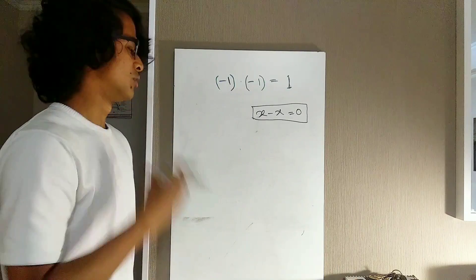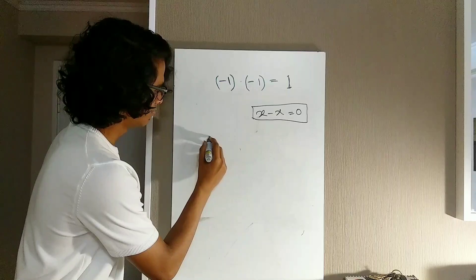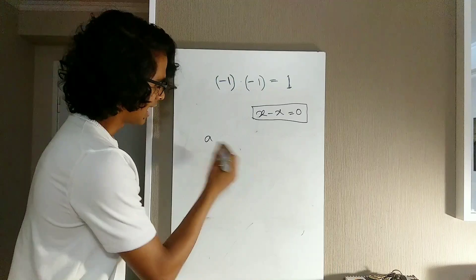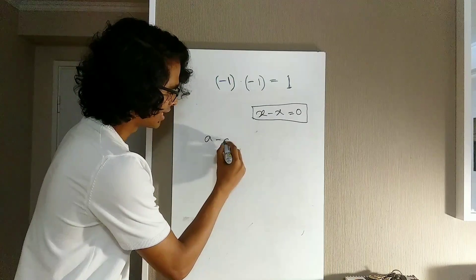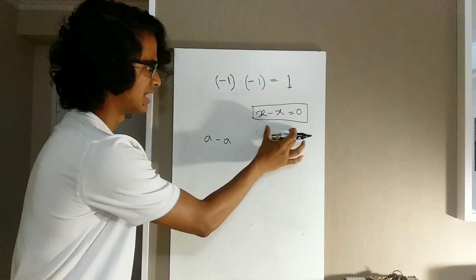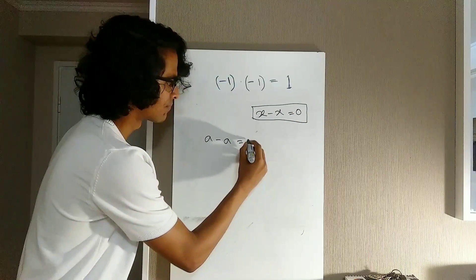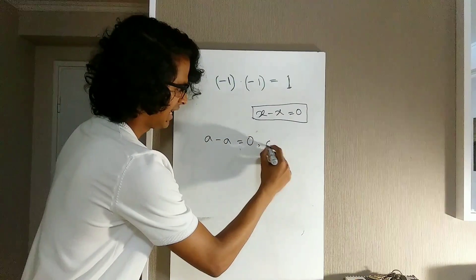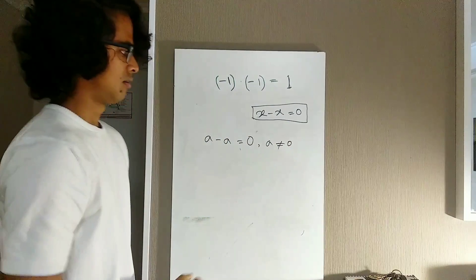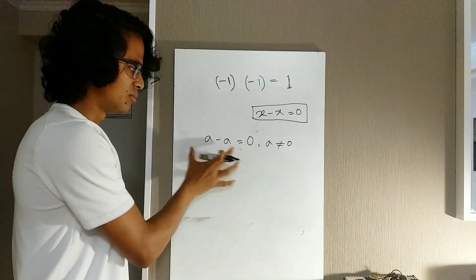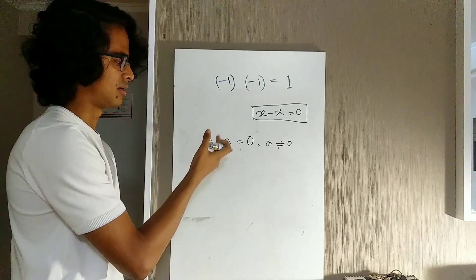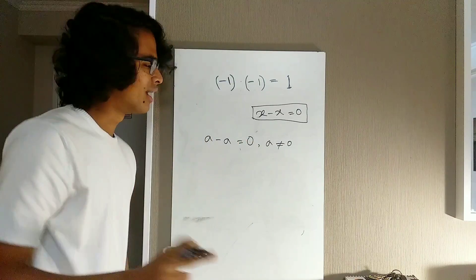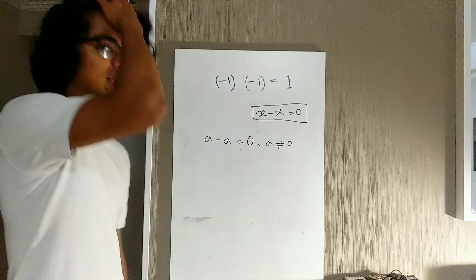So let me start doing the proof. Let's say we have a number a — it doesn't matter what kind of number it is, except it cannot be 0. So a minus a, because of this axiom, has to be 0. I'm assuming that a is not equal to 0. You'll see why it's necessary to assume that a is not 0.